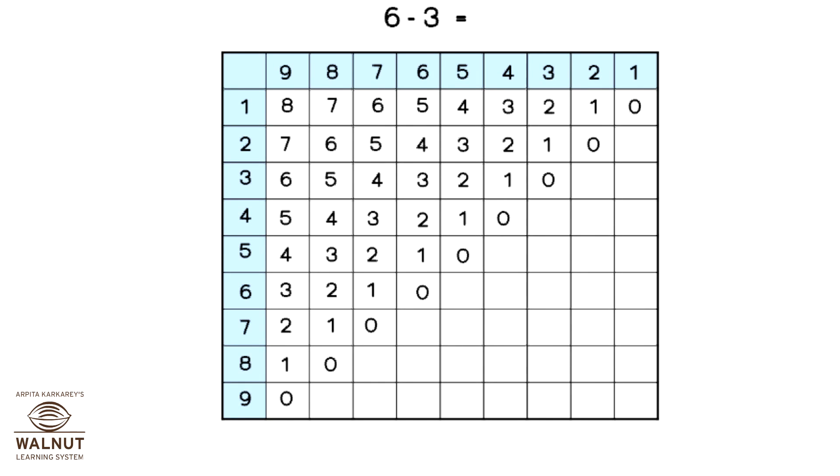Let's try another one. Try doing the subtraction 6 minus 3. We look for 6 in the top row, then we look for 3 in the first column. See where they meet? They meet at 3. That is your answer. So 6 minus 3 is equal to 3.